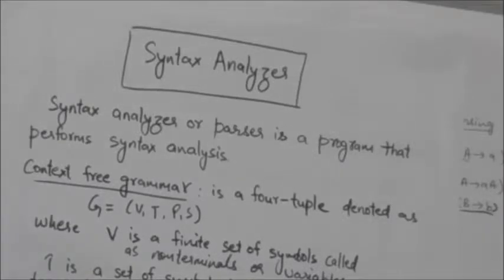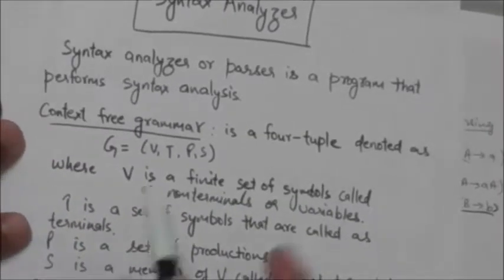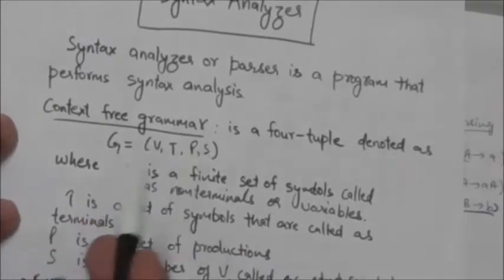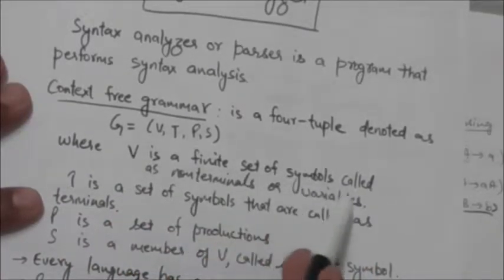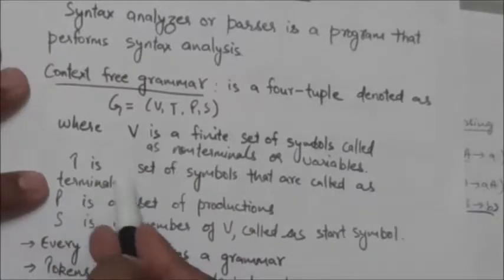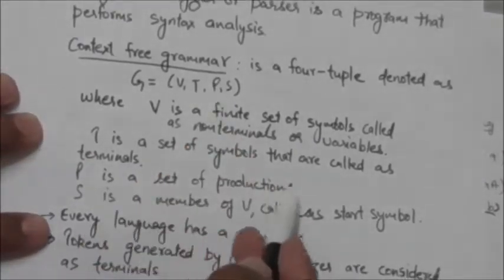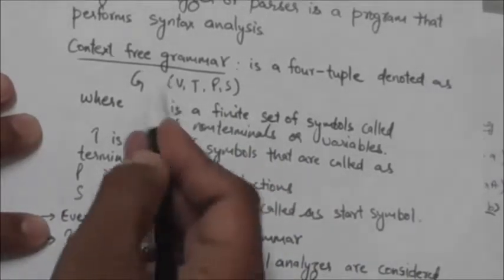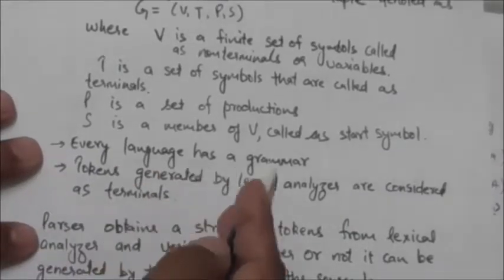To understand how syntax analysis is performed, you must be familiar with some terms like context-free grammar. A context-free grammar is a 4-tuple denoted as G = (V, T, P, S), where V is a finite set of symbols called non-terminals or variables, T is a set of terminal symbols, P is the set of production rules, and S is a non-terminal symbol called the start symbol.